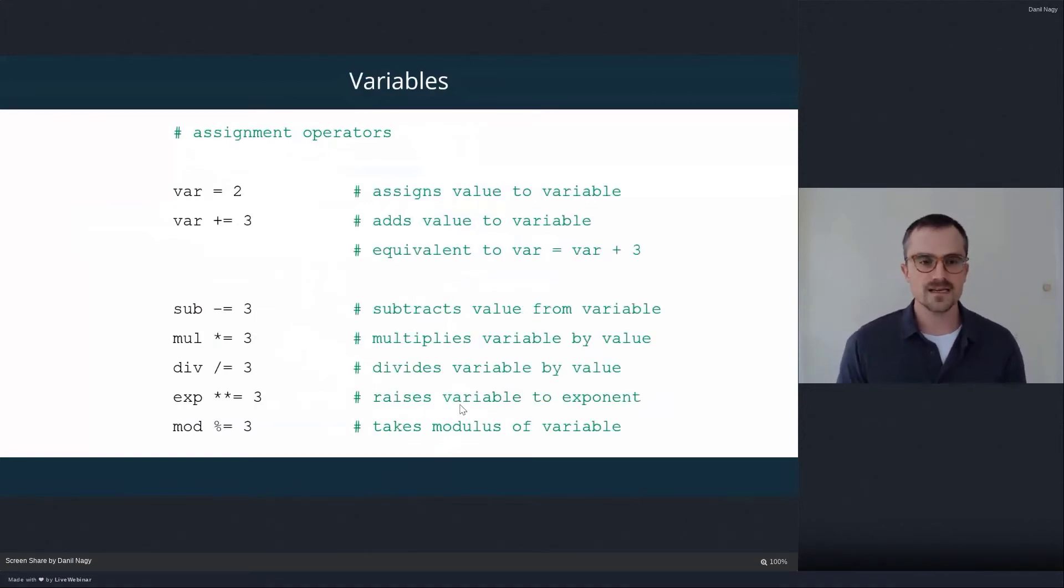We also have different kinds of assignment operators that basically combine an assignment with a mathematical operation. And this is really a shortcut in Python. So for example, here, we have the basic assignment. We assign two to the variable called var. But if we wanted to then add three to that number, we can write var plus equals three. And that basically combines the assignment and the math operation into one operator. So this statement of var plus equals three is actually equivalent to writing out var equals var plus three.